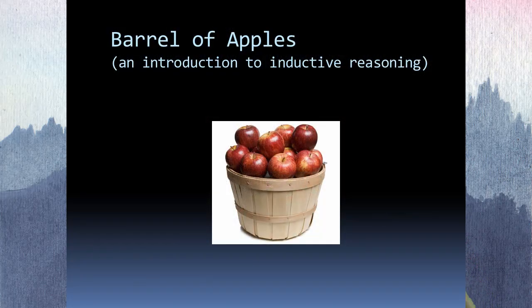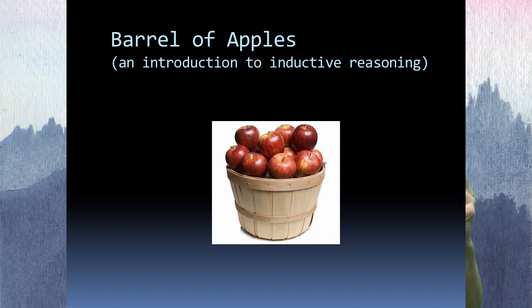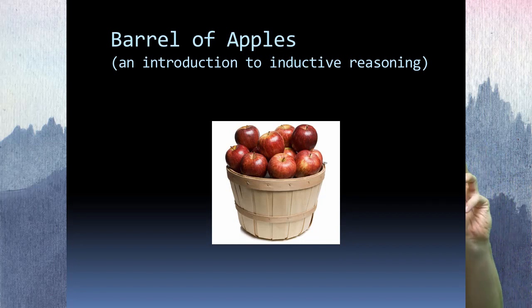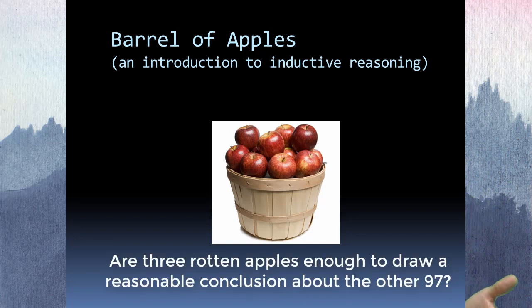Let's talk about the barrel of apples. Imagine you have a barrel, and you've been told by a trustworthy source that there are 100 apples in it. Somebody puts a cover over the barrel so you can't see what the apples look like, but there's a hole at the top allowing you to reach in and pick out one apple at a time. You pick out three apples, and all three are rotten.